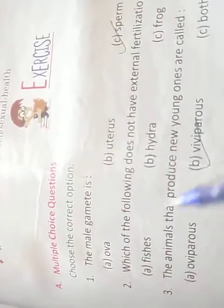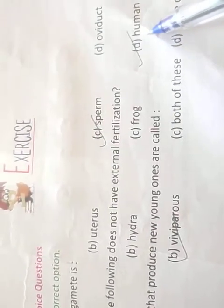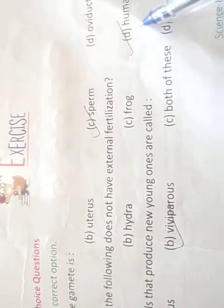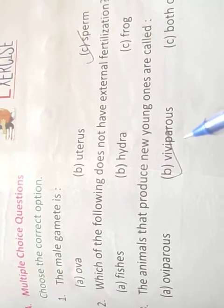Now come to the page number 159. First question hai: The male gamete is - male gamete kaun sa hota hai aapka? Sperm. Which of the following does not have external fertilization? Answer aajega human because yaha internal fertilization hota hai. The animals that produce new young ones are called viviparous.